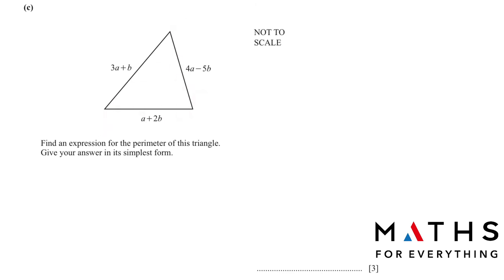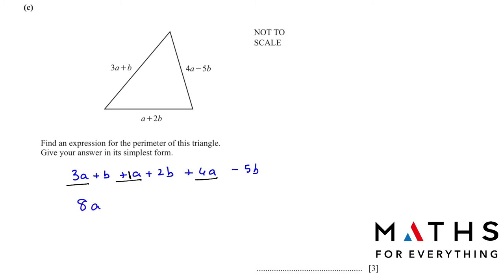We have been given a triangle with sides in algebraic form: (3a + b), (a + 2b), and (4a minus 5b). Find an expression for the perimeter in simplest form. Add all the a terms: 3a + a + 4a = 8a. Add all the b terms: 1b + 2b minus 5b = negative 2b. So the perimeter is 8a minus 2b.